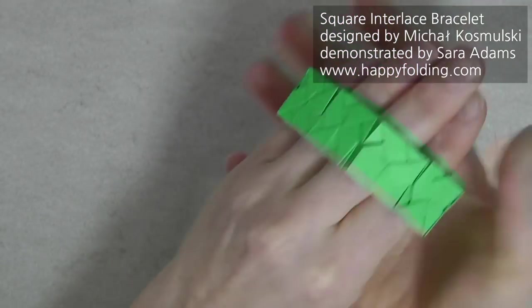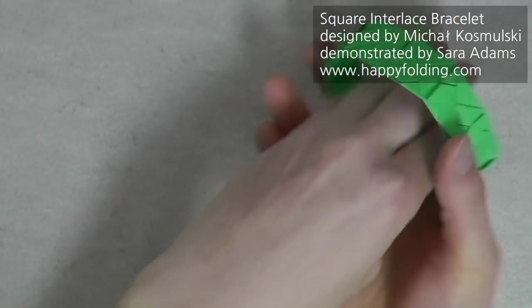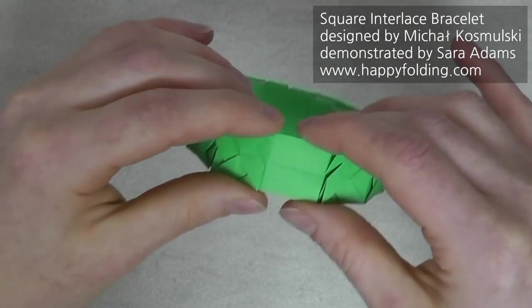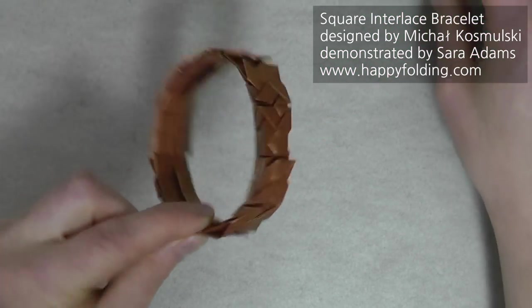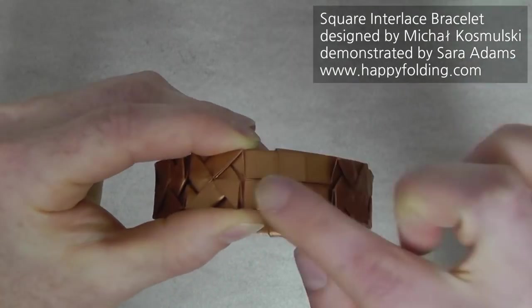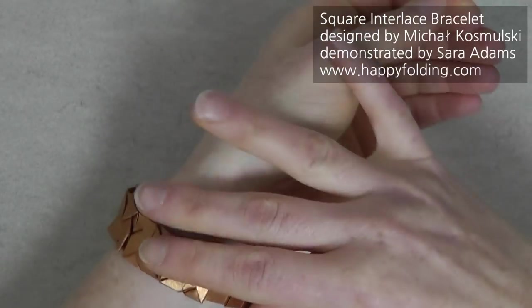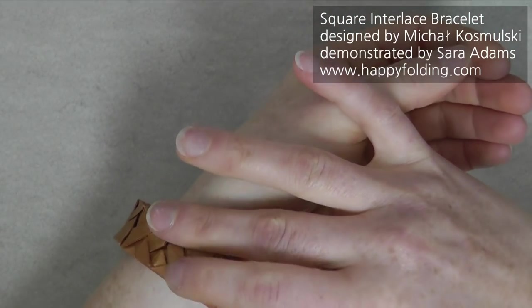Now, for me, because I used quite a long strip, I can simply slip this on. But if you chose to do it a bit more snugly like I did here, what you can do is pull this apart, perhaps one square, so you have a bit more play and then it's easy to slip on and then you just need to push it together again.